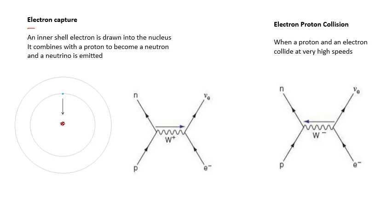Here's another interaction: electron capture. In electron capture, one of the electrons in the inner shell is captured by the nucleus, so an electron combines with a proton. We get a W plus boson, and the products are a neutrino and a neutron. So proton plus electron gives us a neutrino and a neutron.